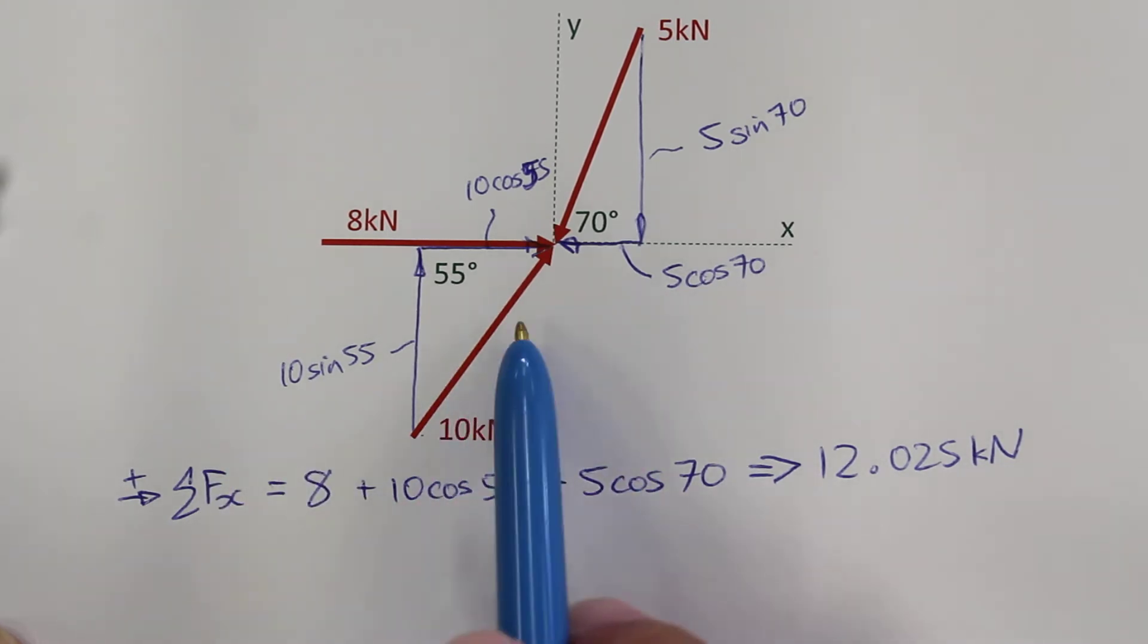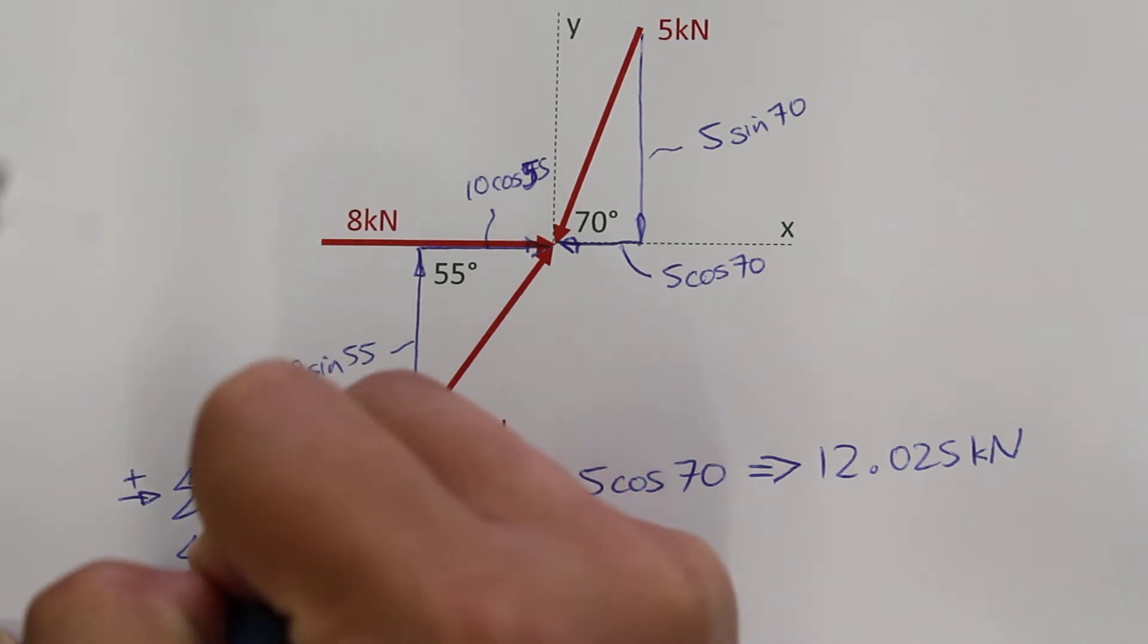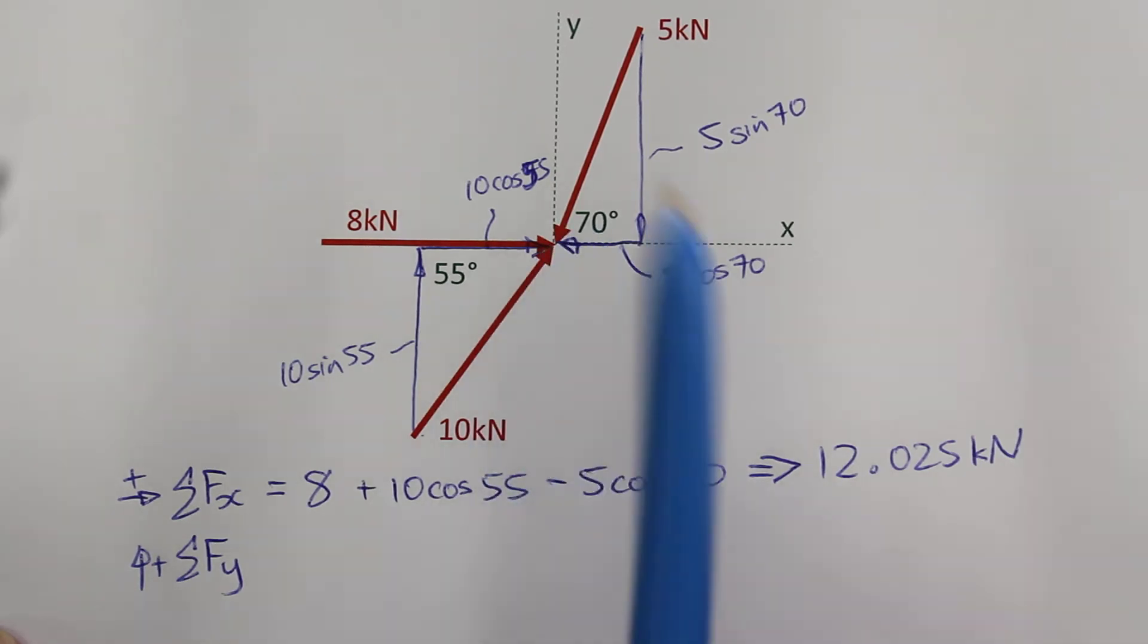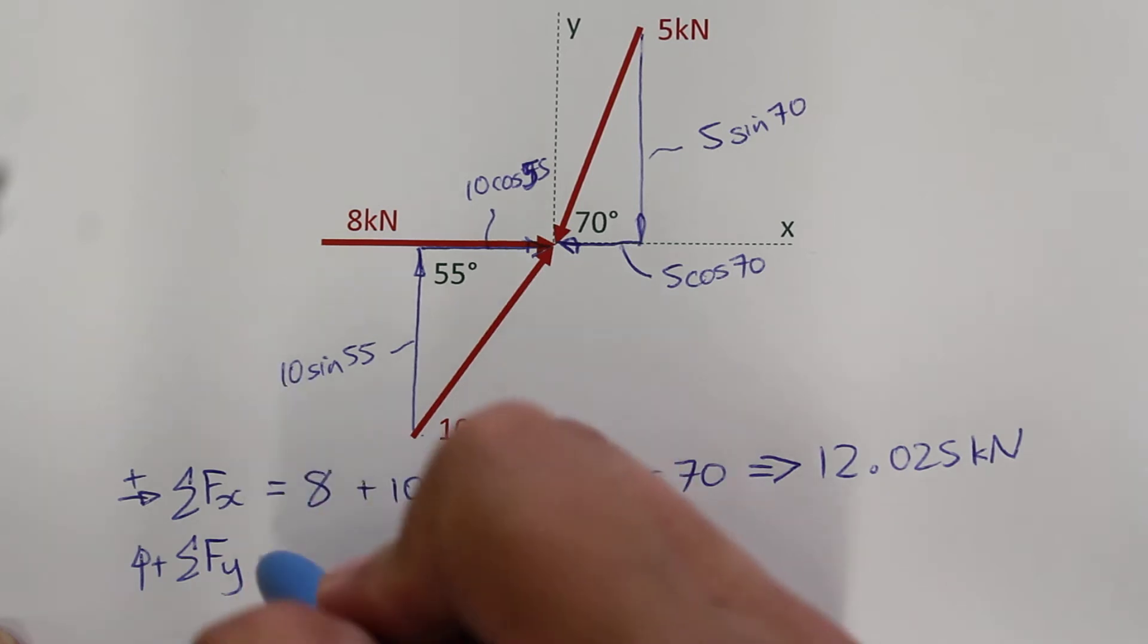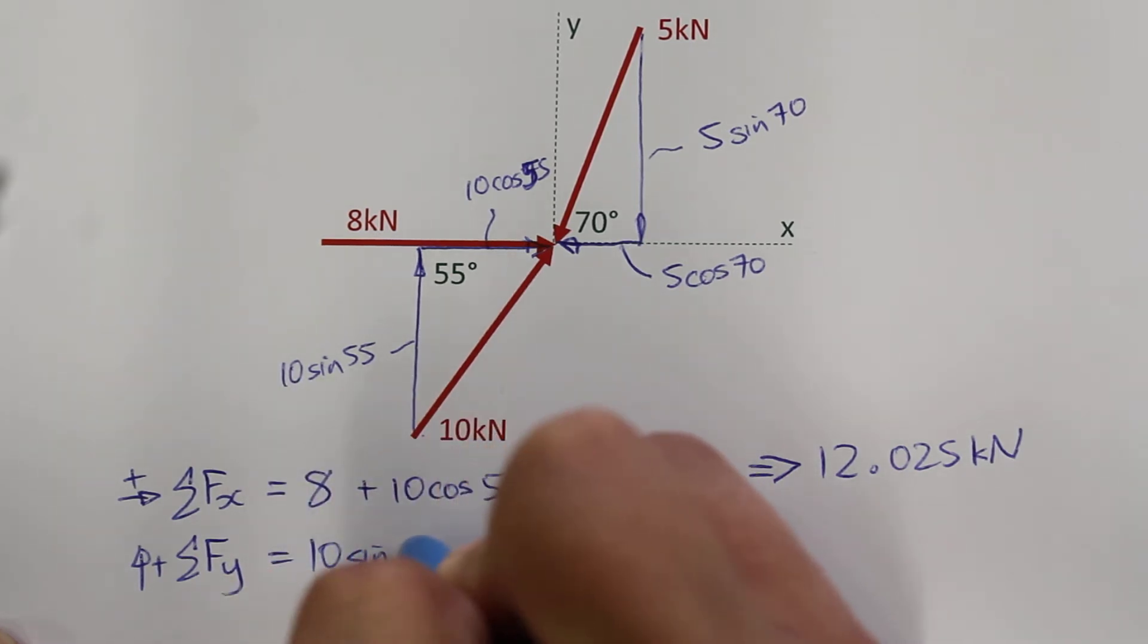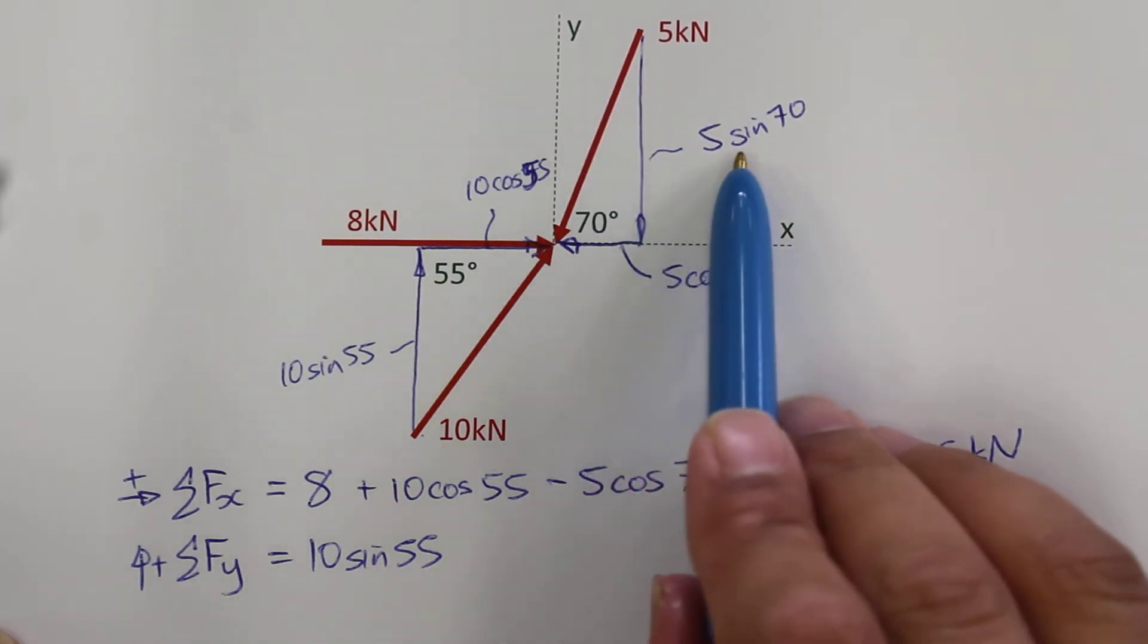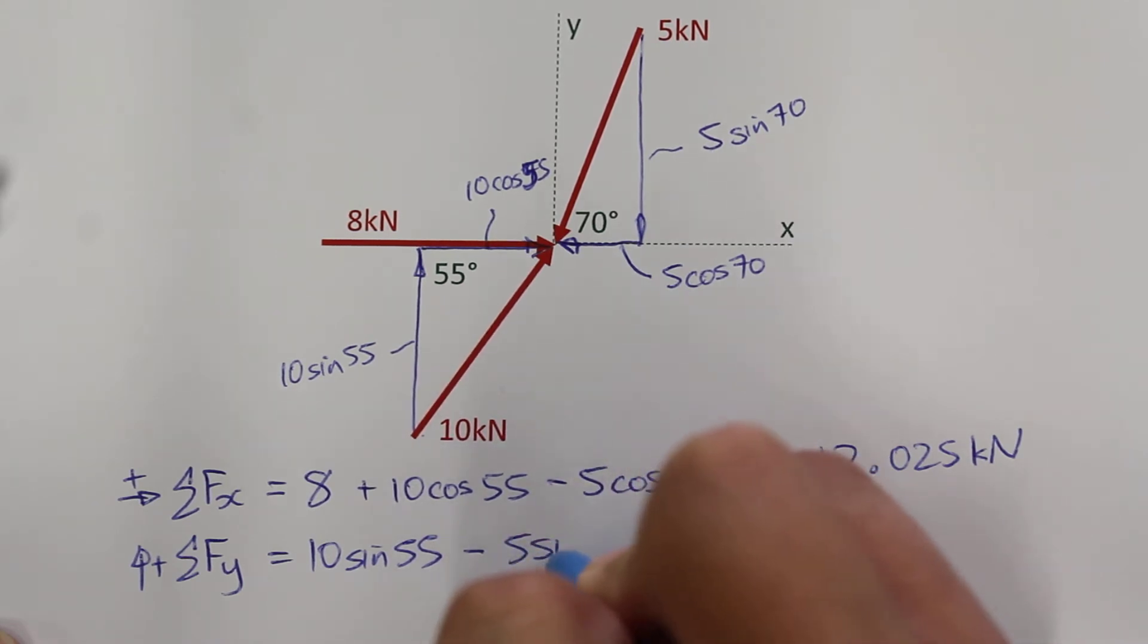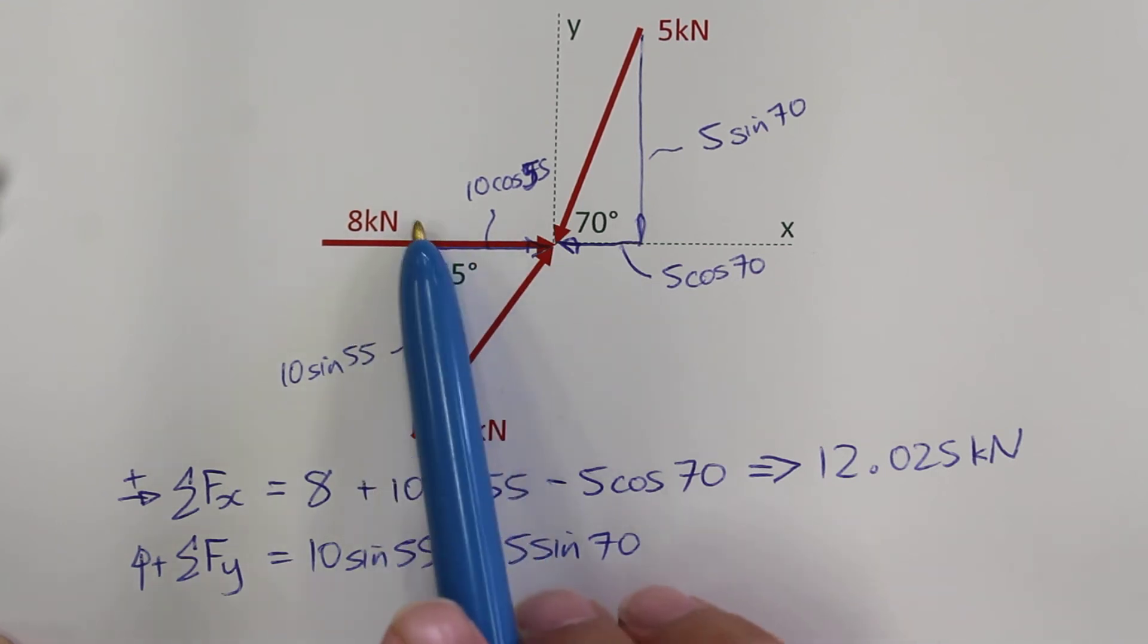For adding the forces in the y direction, with up being our positive direction, I have 10 sin 55 and negative 5 sin 70, so that's going down.